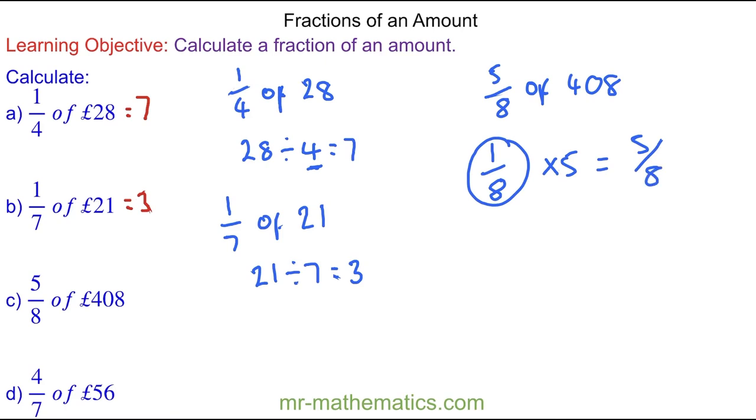So one eighth will be 408 divided by eight, which we can work out using a bus stop method. So 408 on the inside, eight on the outside. This doesn't go.